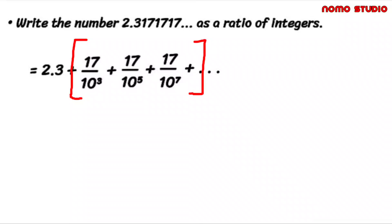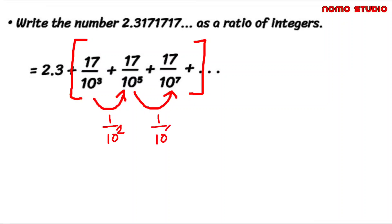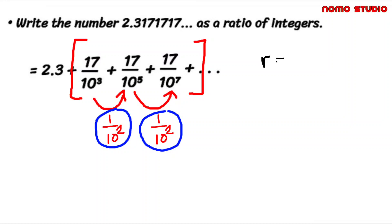We know that this is a geometric series because we are continuously multiplying by a common factor. In this case, we keep multiplying each term successively by 1 over 10 squared to generate the next term. This constant number by which we are multiplying is known as R. Therefore, R is 1 over 10 squared.